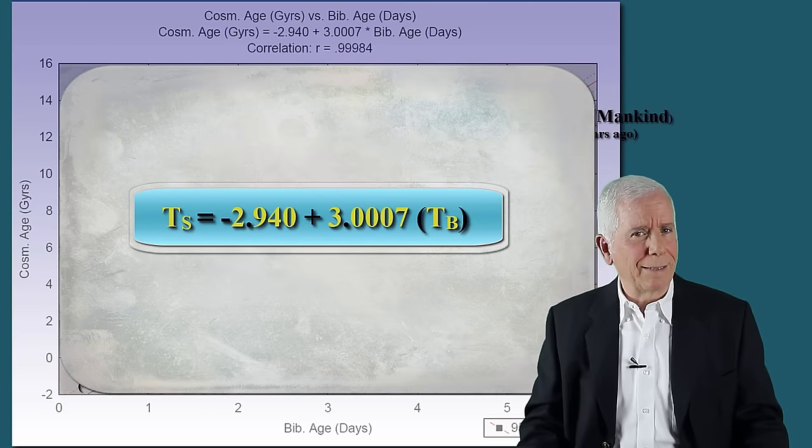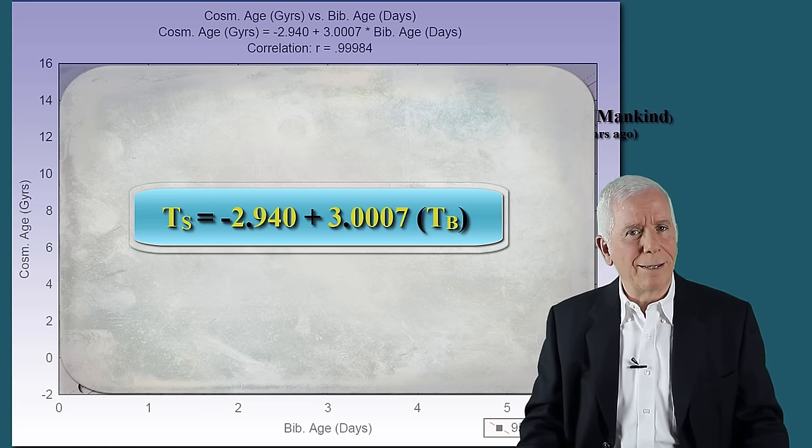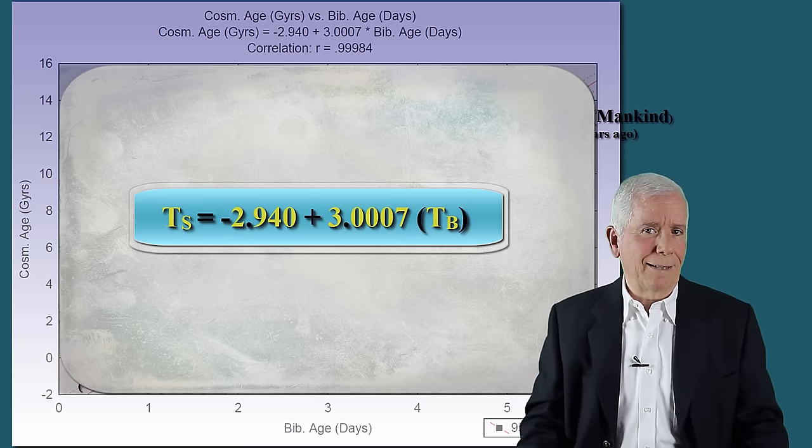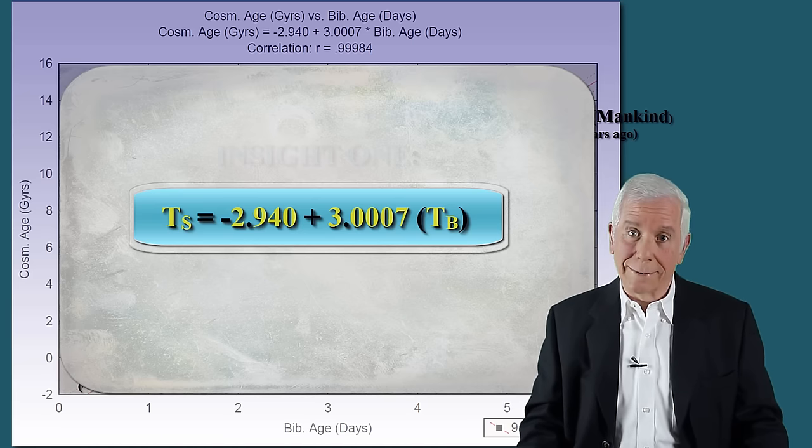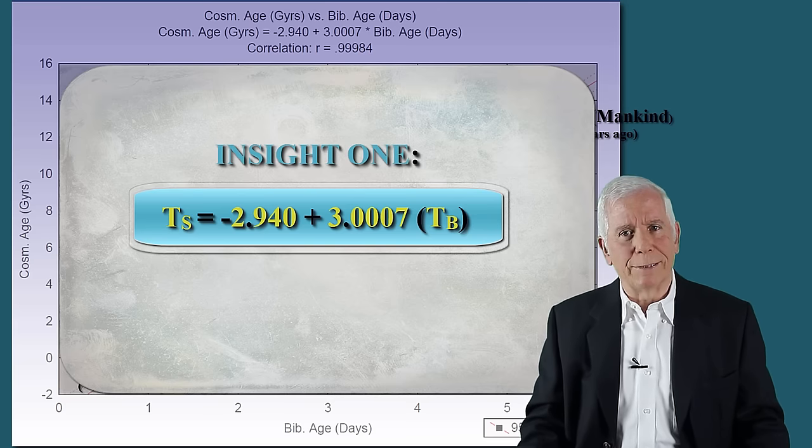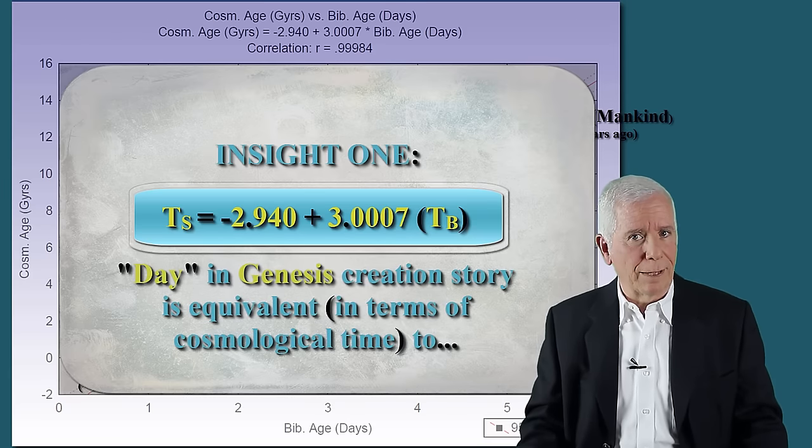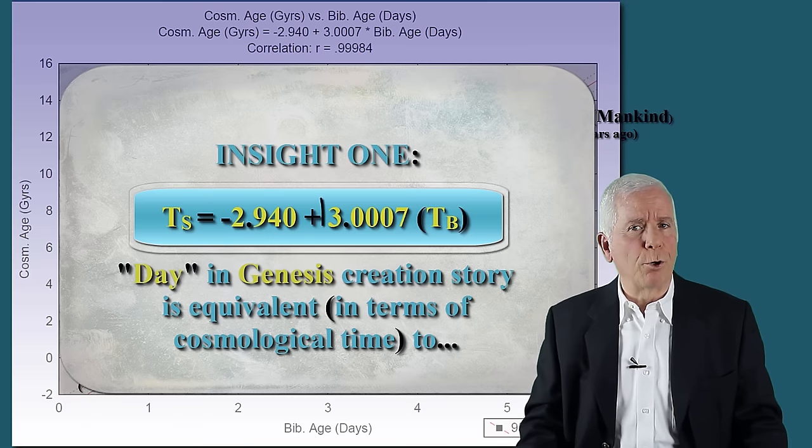The equation presented is stunning in three respects, which bring forth three stunning insights. Insight one. From the equation, one may deduce that day in Genesis creation story is equivalent, in terms of cosmological time, to 3.0007 billion years.